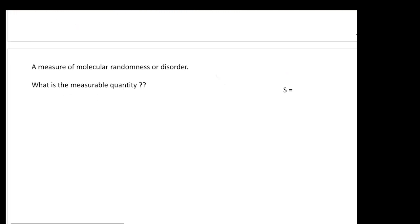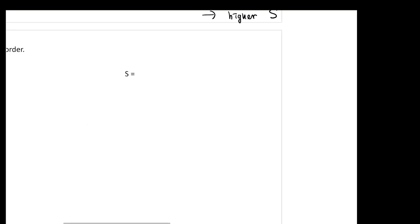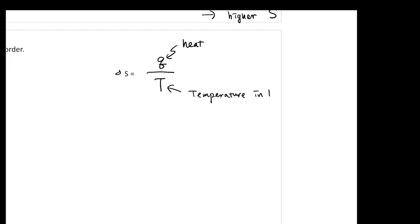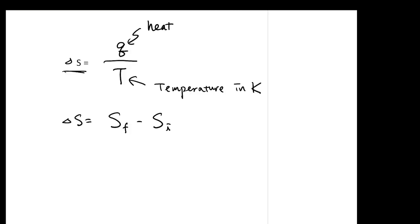Entropy is a measure of molecular randomness or disorder. The definition: ΔS equals Q over T, where Q is heat and T is temperature in Kelvin. For a system, ΔS means the entropy in the final state minus the entropy in the initial state.